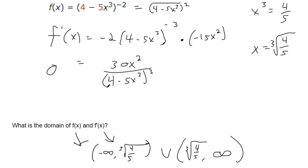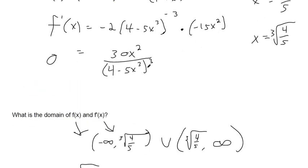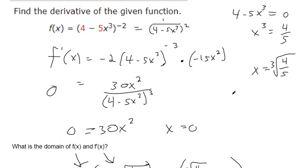The derivative fails to exist at the cube root of four fifths. But if we multiply to both sides, we get zero equals thirty x squared. If you divide both sides by thirty and take a square root of both sides, you get x equals zero. And so that's where the graph is going to have a horizontal tangent.